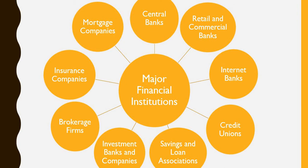The next type of financial institutions are investment banks and companies. There are various banks that look after portfolio management and similar activities. Apart from that, we have brokerage firms, insurance companies, mortgage companies, and many other institutions that play a major role in the finance industry.